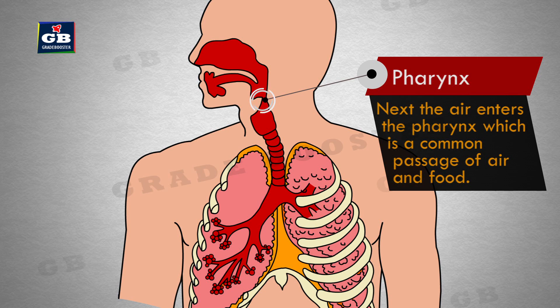Pharynx: next, the air enters the pharynx. This is a common passage of both air and food.